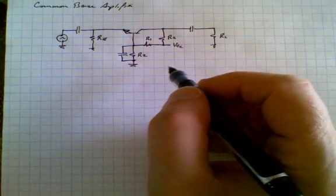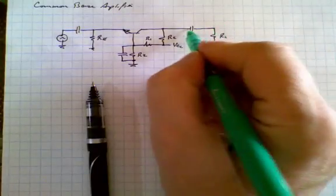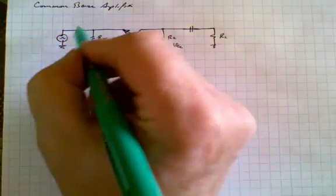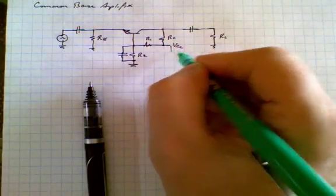So the first thing we want to do is we want to draw this as an equivalent AC circuit. To do that, of course, the capacitor has become shorted. And of course, then the supply voltage also goes to zero.